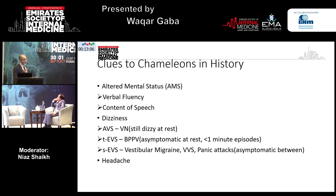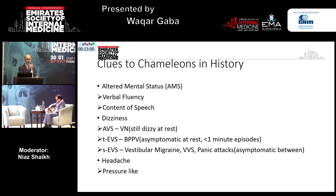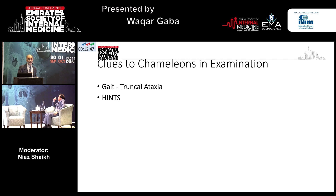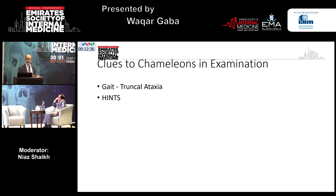The third clue to chameleons is headache — more specifically a pressure-like headache. In examination, two things I will ask you to do: one is make them walk, especially if you see them in the ER or acute medicine unit. Please make them walk — you will get lots of clues. You will see truncal ataxia and falling to one side, which is a clue towards a chameleon.